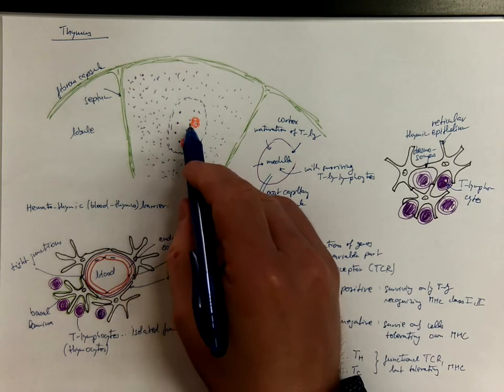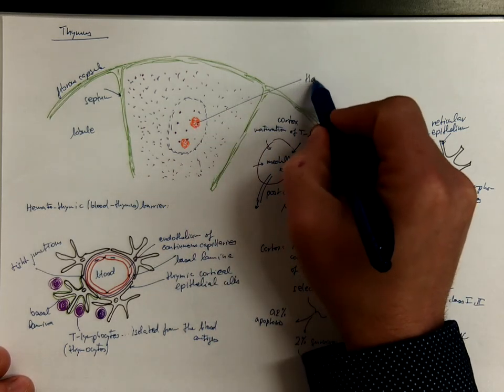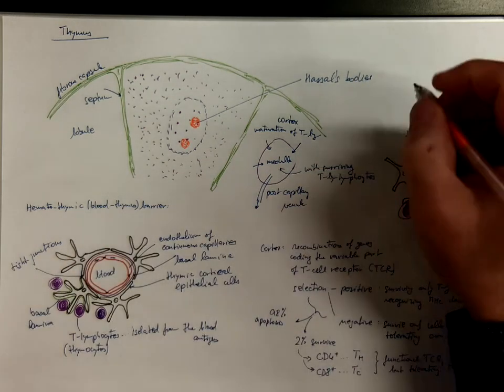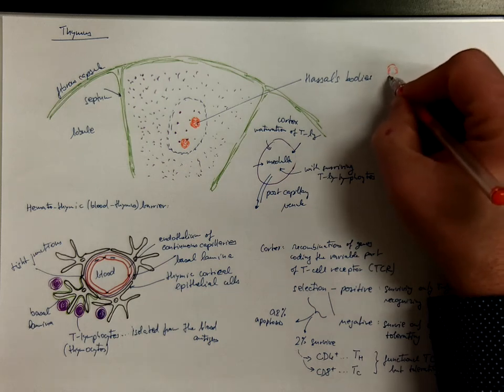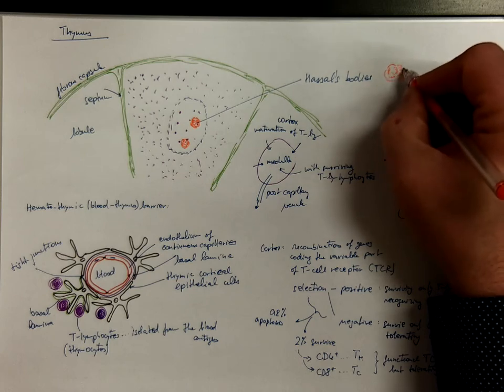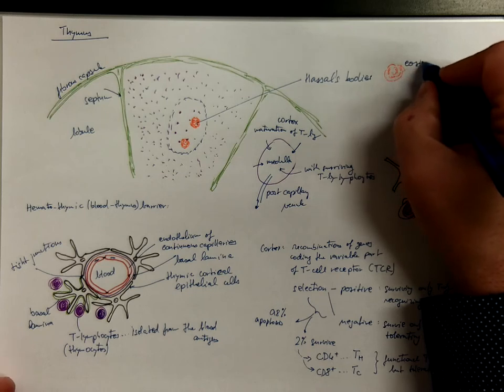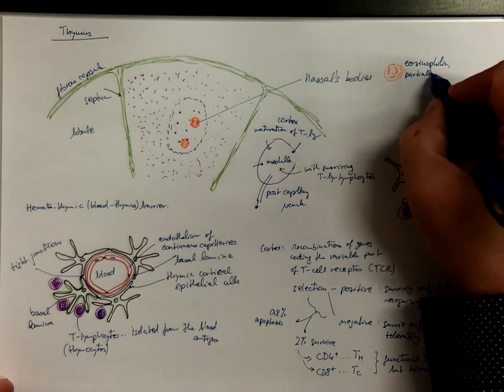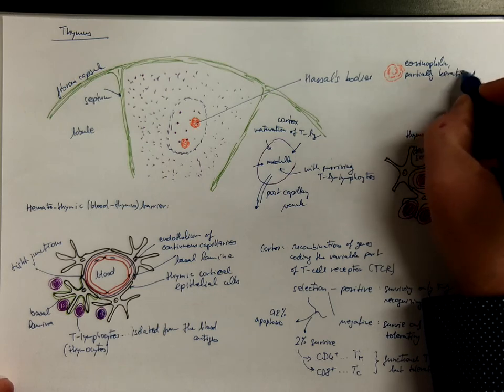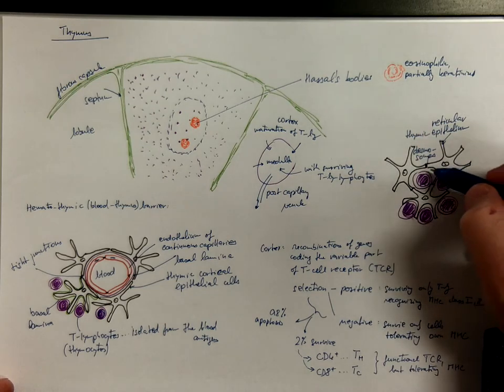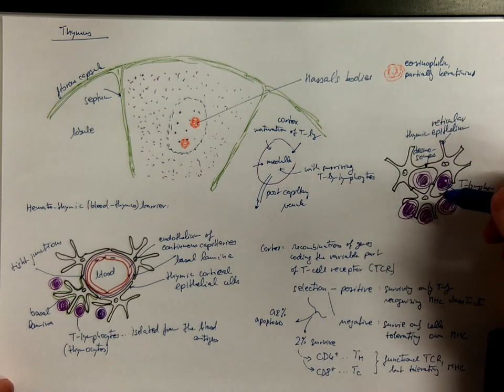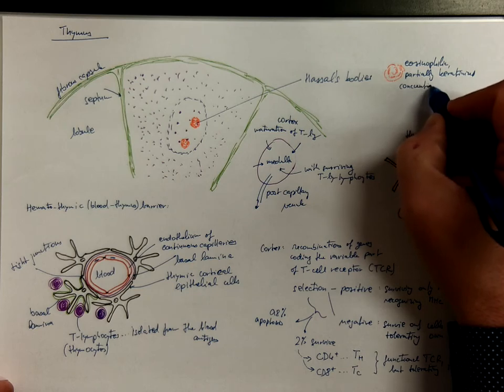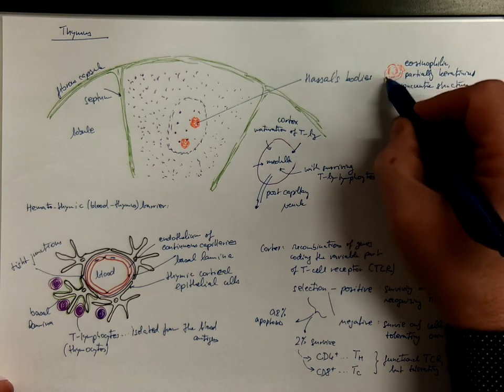In the medulla we got these Hassel's bodies that are eosinophilic collapsed reticular cells. They have this concentric structure. They could be partly keratinized. They do express cytokeratins because these are epithelial cells, and cytokeratins are intermediate filaments of epithelium. They have the concentric structure resembling onion.